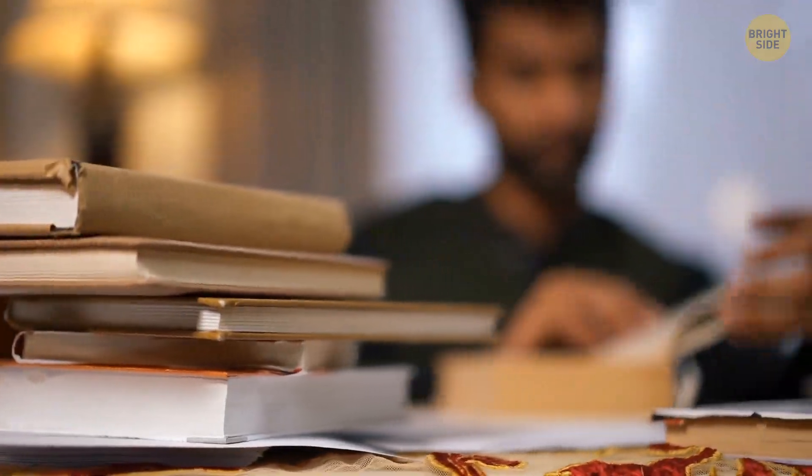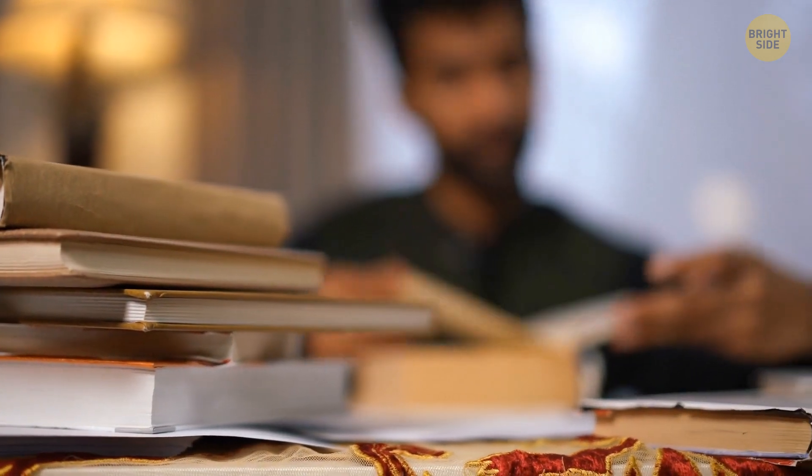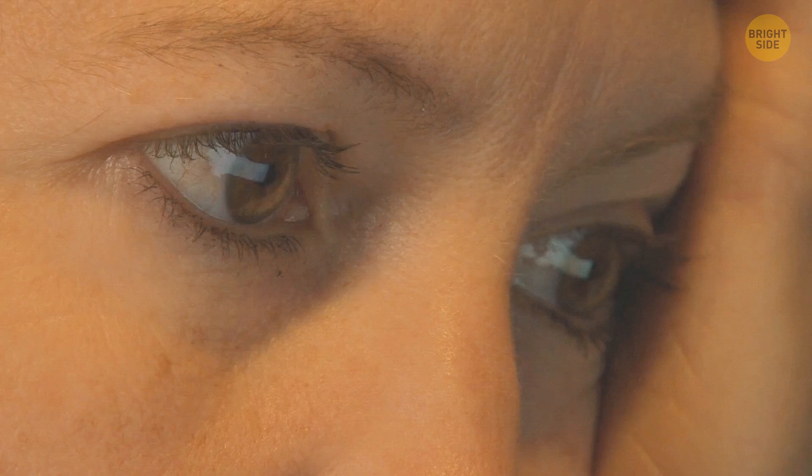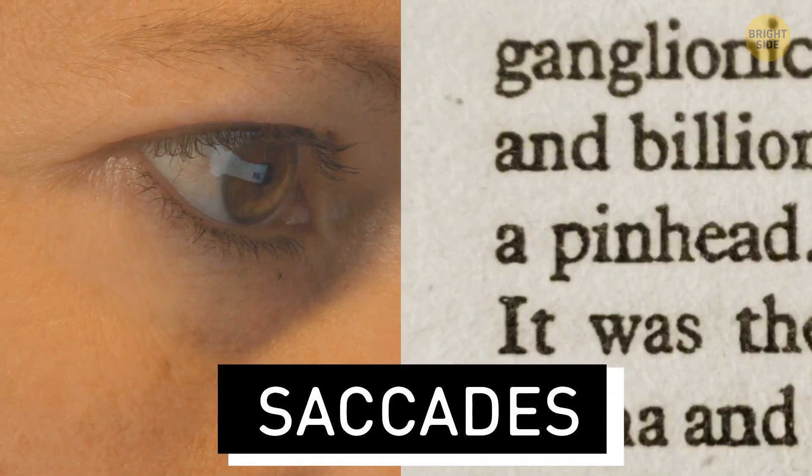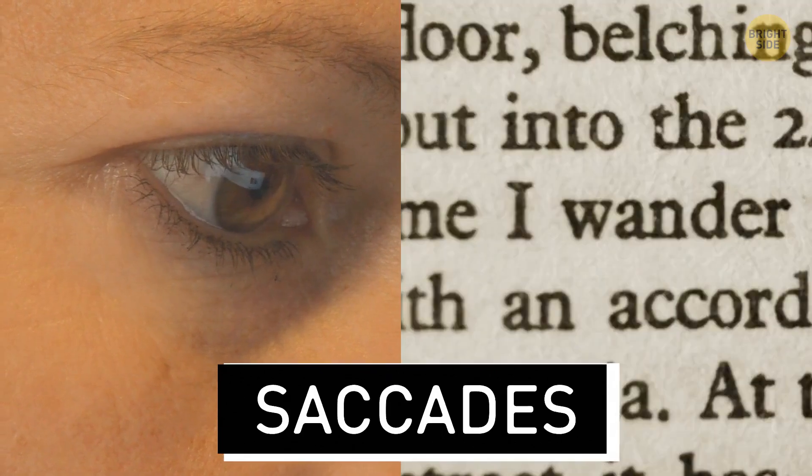One interesting feature about how our brain processes reading is that it doesn't necessarily do it in a straight line. In fact, our eyes do these unique movements called saccades. They're quick jumps across the text, back and forth. Sometimes it's a big leap, other times a tiny hop.